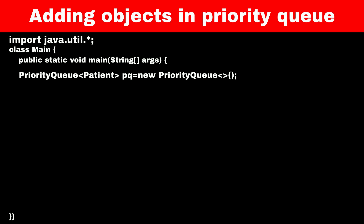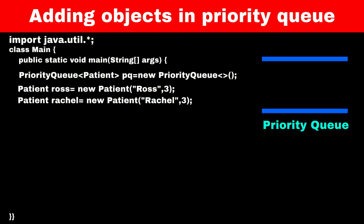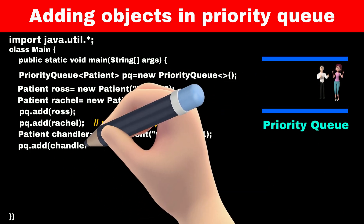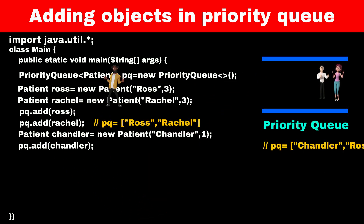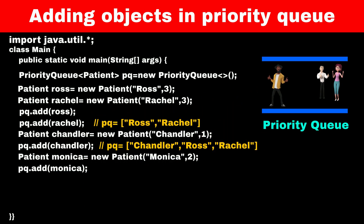Now suppose Ross and Rachel came to the hospital — we will create objects for them. Their problem is minor, so we will set their priority as 3 and add them into the priority queue. Now Chandler came to the hospital — he had a heart attack, so we will create an object with high priority, which is priority 1, and add him to the queue. Now Monica came to the hospital because she had an allergy, which is moderate priority, that is priority 2, so we will create and add her object into the queue.